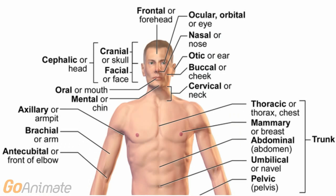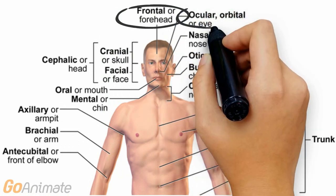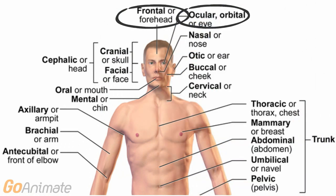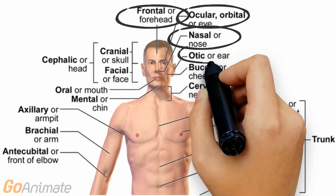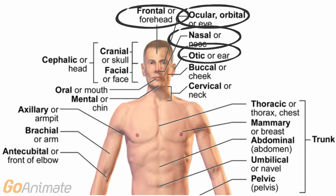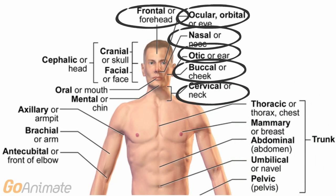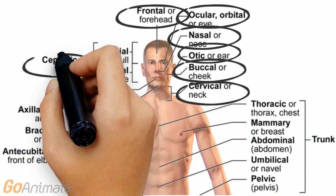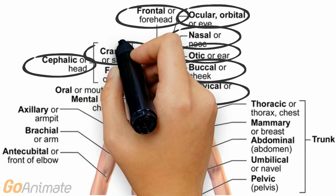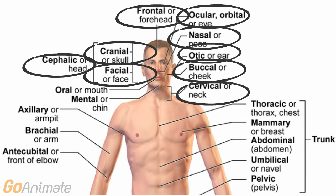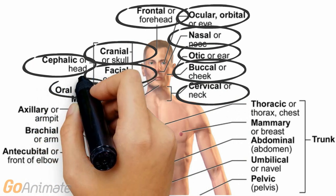Every part of the body has its own term. Here is the frontal region, the eye or ocular region, the nose or nasal region, the ear or otic region, and the buccal or cheek region. The cervical or neck region. The head or cephalic region includes the cranial region or skull and facial region.